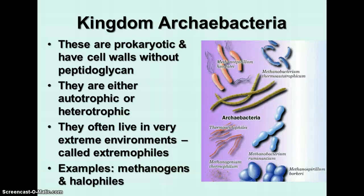Kingdom Archaebacteria: once again, are prokaryotic. They have cell walls without peptidoglycan. They are either autotrophs or heterotrophs. They often live in very extreme environments and are often called extremophiles. Examples are methanogens and halophiles.